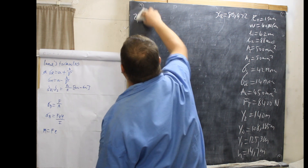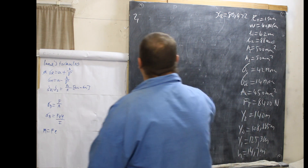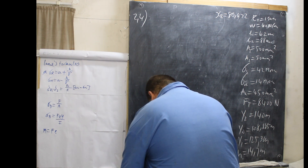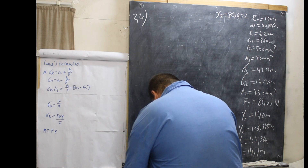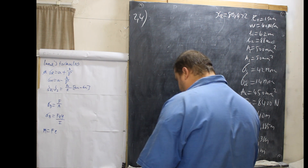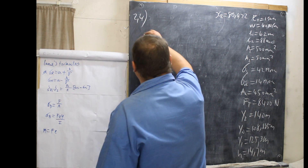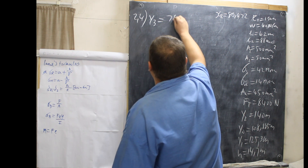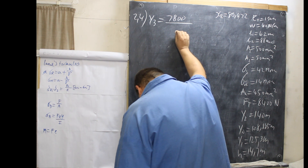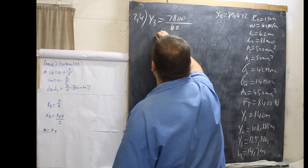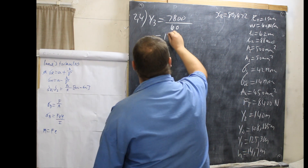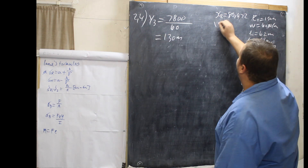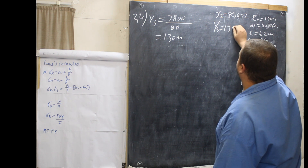The next question, 2.4, asks us to calculate the horizontal distance from the longest support to where the tension is 7,800 newtons. So Y3 equals 7,800 over 60, which equals 130 metres.